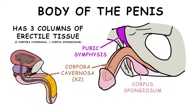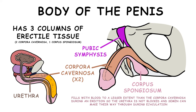The corpus spongiosum contains the urethra, which is the tube that allows for exit of urine or semen. Note that the corpus spongiosum fills with blood to a lesser extent than the corpora cavernosa during an erection, so that the pressure does not result in the urethra becoming occluded. This way, semen can make their way through during ejaculation.